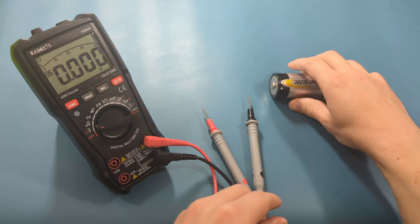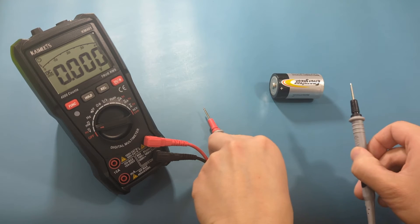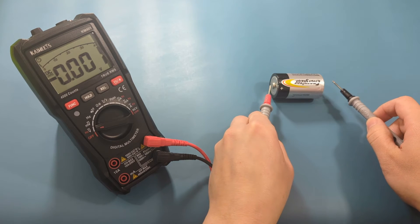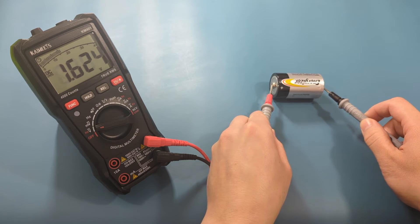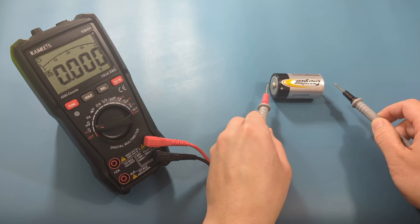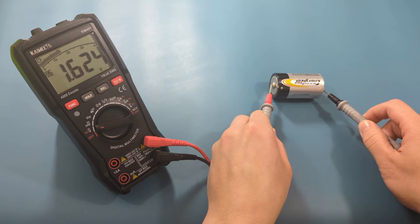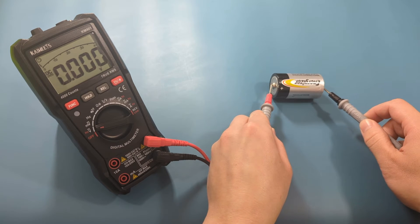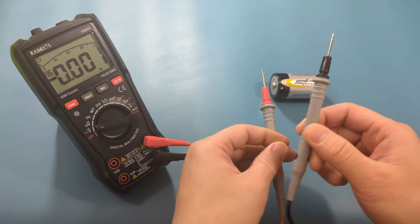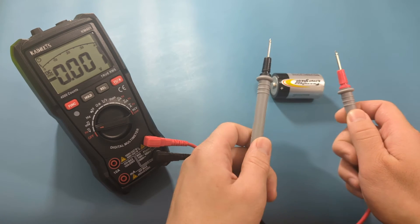To test the voltage, touch the red probe lead to the positive terminal of the battery, and the black probe lead to the negative terminal of the battery. For a new battery, the voltage can be slightly higher than 1.5 volts. We're getting 1.6 volts. This is a good battery.